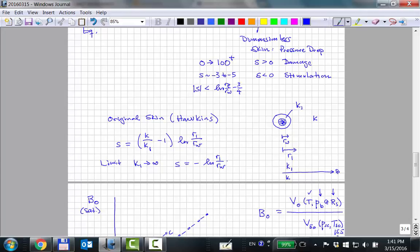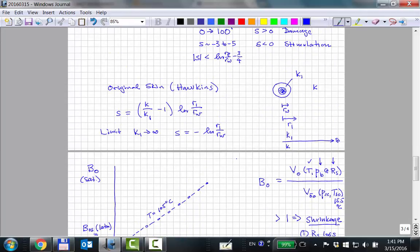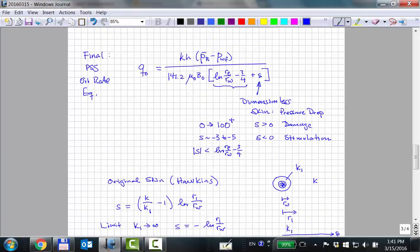Is this wrong? Or is this... That's the equation. So if you stimulate the well and you let... So... K1 less than K is damage and K1 greater than K is stimulation. But in the limit as K1 goes to infinity that's a great stimulation in a sense then your skin is limited to minus log R1 over Rw. That's the limit.